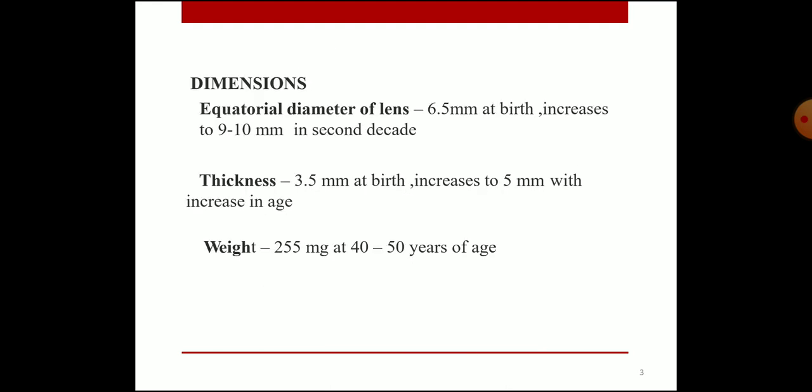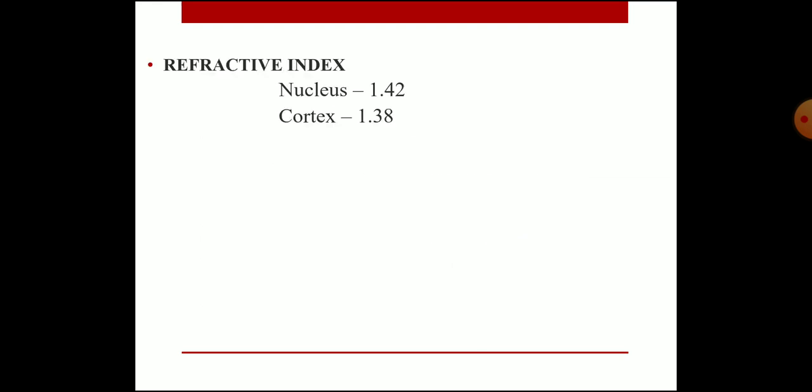The dimensions of the lens: equatorial diameter is 6.5 mm at birth, increasing to 9–10 mm in the second decade of life. Thickness is 3.5 mm at birth, increasing to 5 mm with age. Weight is 255 mg at 40–50 years of age. The refractive index is 1.42 at the nucleus and 1.38 at the cortex.